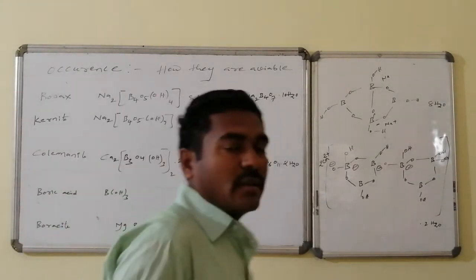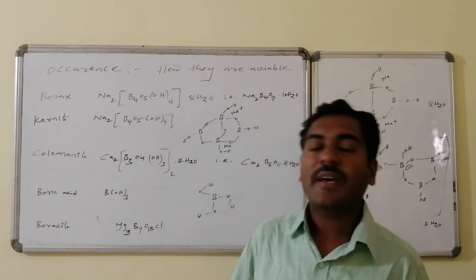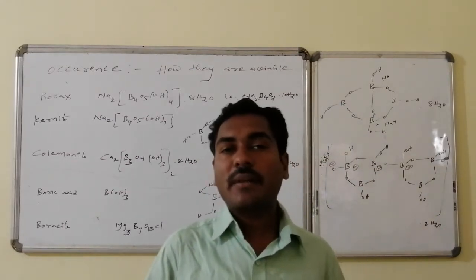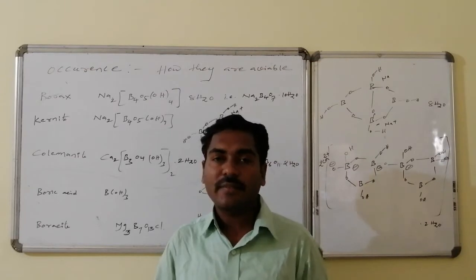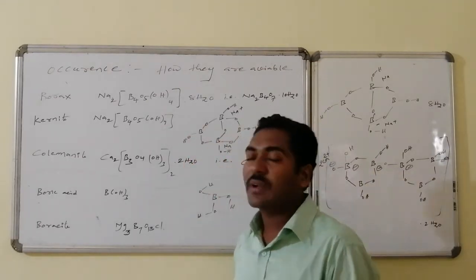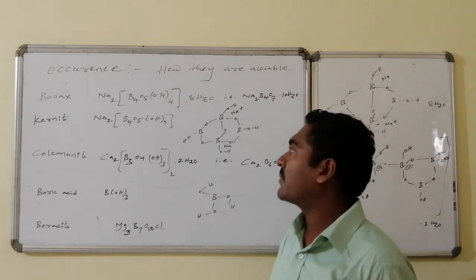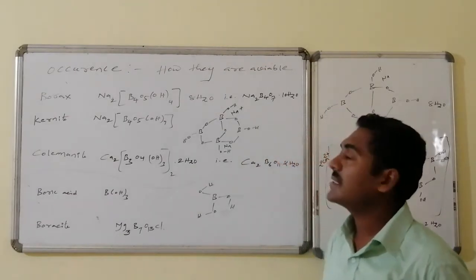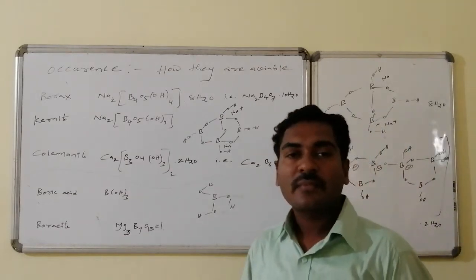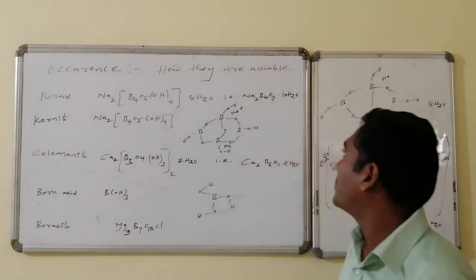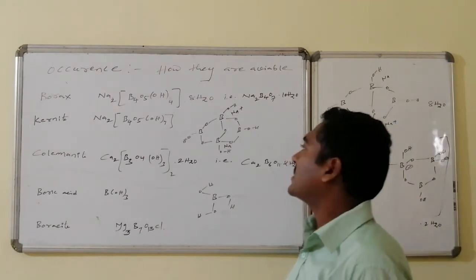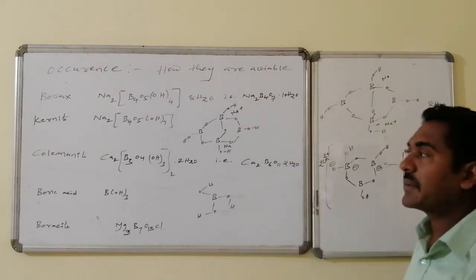Let us now discuss the occurrence — that is, in what form these elements are available in nature. Boron is available in nature in the form of Borax. Borax has the formula Na₂B₄O₅(OH)₄·8H₂O, which can also be written as Na₂B₄O₇·10H₂O. Understanding the structure of Borax will be useful for later discussion.